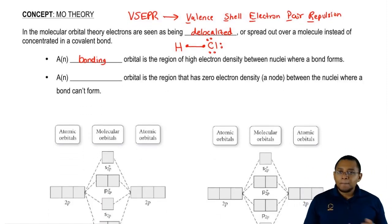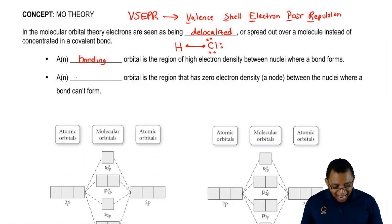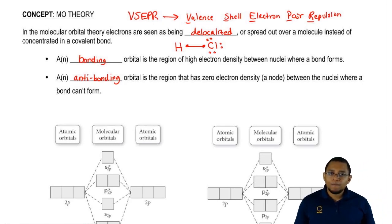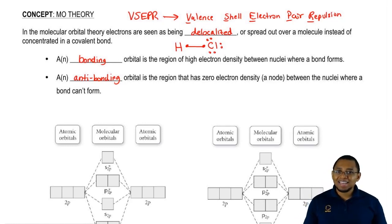Opposed to that, fighting against the bonding orbital is the anti-bonding orbital. This is the region of zero electron density between the nuclei where a bond cannot form. What this means is that every time we're forming a covalent bond between nonmetals, there are forces that want to keep the bond together and at the same time there are forces that exist that want nothing but to destroy that bond.